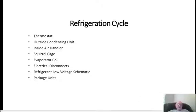This is about the refrigeration cycle, along with low voltage electrical. The thermostat initiates the action, which starts the outside condensing unit and your air handler unit. Your squirrel cage will automatically come on in air conditioning mode. We'll talk about the evaporator coil, electrical disconnects, refrigerant low voltage schematic, and package units.